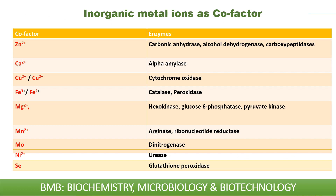This table shows some inorganic metal ions as co-factors and their corresponding enzymes. Zinc is required for carbonic anhydrase, alcohol dehydrogenase, and carboxypeptidase. Calcium ion is required for alpha-amylase. Copper ion is required for cytochrome oxidase. Iron is required for catalase and peroxidase. Magnesium is required for hexokinase, glucose-6-phosphatase, and pyruvate kinase — especially kinase enzymes.